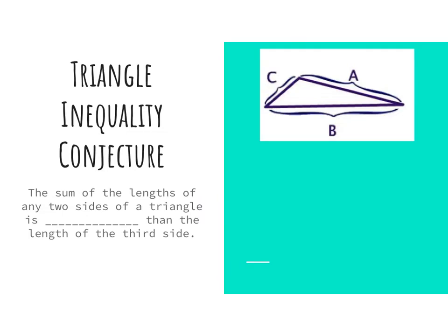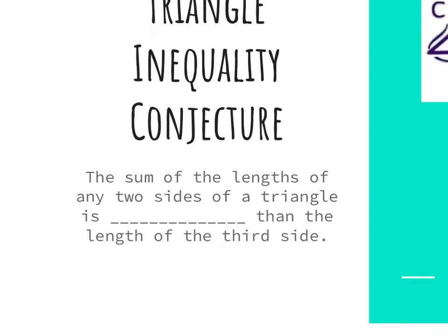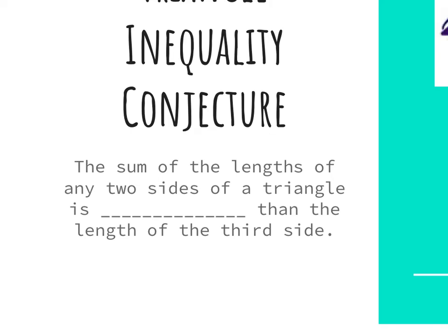So this is what the triangle inequality conjecture is. Just saying that the sum of any two sides of the triangle is greater than the length of the third side. And this works in any triangle whether it's isosceles, scalene, equilateral, doesn't matter. It'll work out.